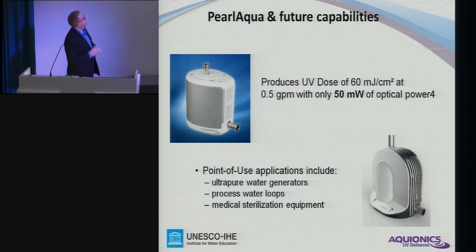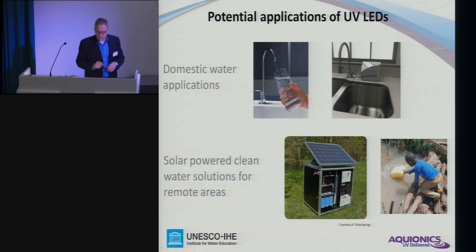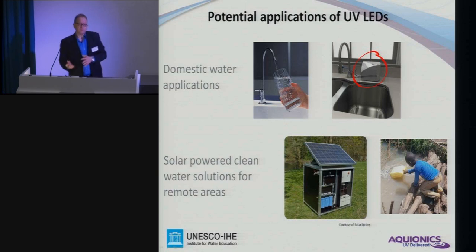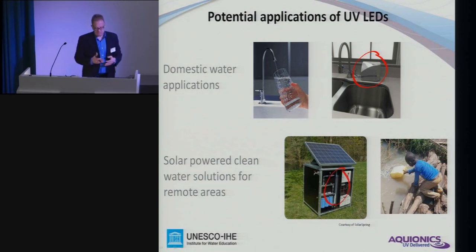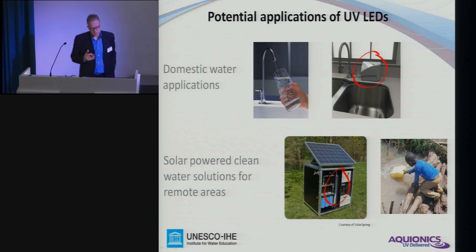Potential applications include domestic water. Many people don't really trust city water coming through the pipes, so it could end up as an additional treatment device on the countertop or underneath. There are solar-powered solutions available — Solar Spring is an example with a UV system employed. Since they bring this equipment to remote areas, unfortunately the lamp often breaks during handling. So if it were equal in price, it would be a no-brainer to replace this with an LED. We are talking about flow rates up to 10 liters per minute, so this is not really competing with traditional UV systems, which are way above that flow range.